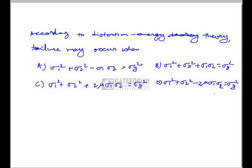Here σ₁ and σ₂ represent the maximum and minimum principal stresses, and σᵧ represents the elastic limit in simple tension. For the distortion energy theory, the failure criterion is σ₁² + σ₂² - σ₁σ₂ = σᵧ², so the correct answer is A.